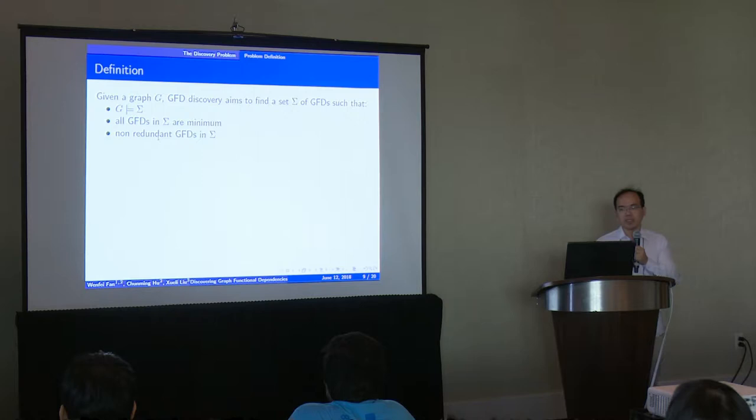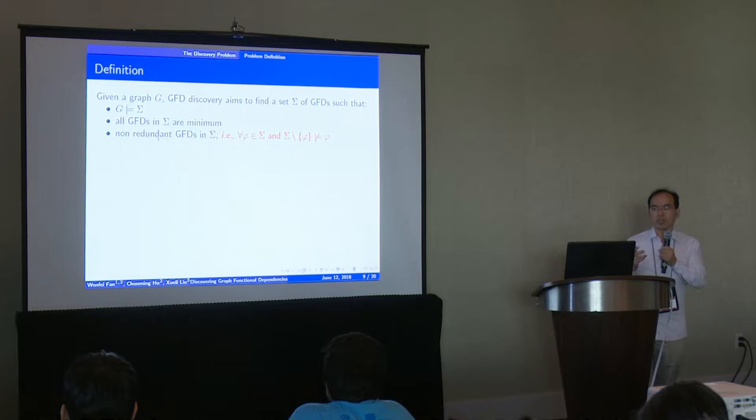And no redundant GFDs exist in sigma, which means that any GFD in the sigma cannot be implied by other GFDs in the set. These three properties correspond to the correctness, no attributes, and no redundancy of the set.